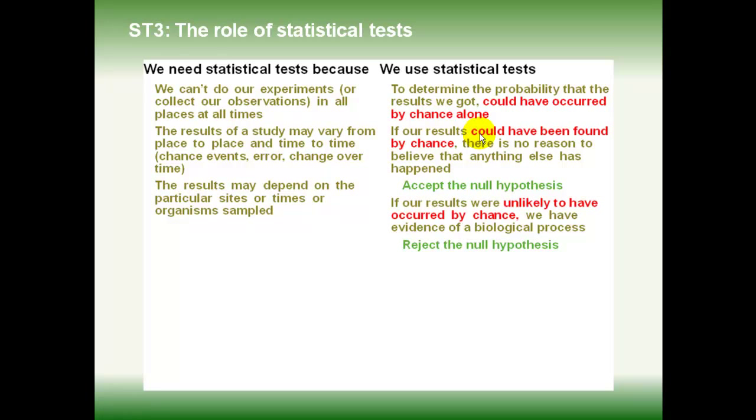If they could, then we basically say it doesn't seem to have anything going on here. If our results are unlikely to occur by chance, then we've got evidence for some kind of biological process. Predators are important. Certain risk factors in disease are important. The statistical test is a guide in cases where the data are variable and our conclusions are uncertain.